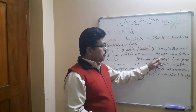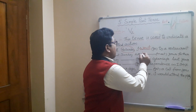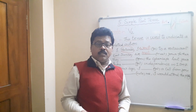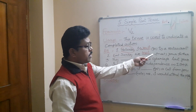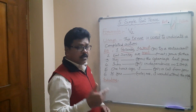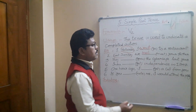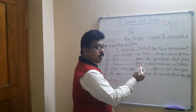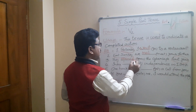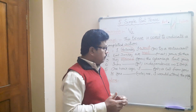'Last Sunday we ___ (meet) your father.' Meet is V1; V2 is met. Last Sunday, last Monday, last week, last month, last year — these are all indications. So last Sunday we met your father. Another example: 'They ___ (open) the cyber cafe last year.' Open is a regular verb, so V2 is opened. Last year they opened the cyber cafe.